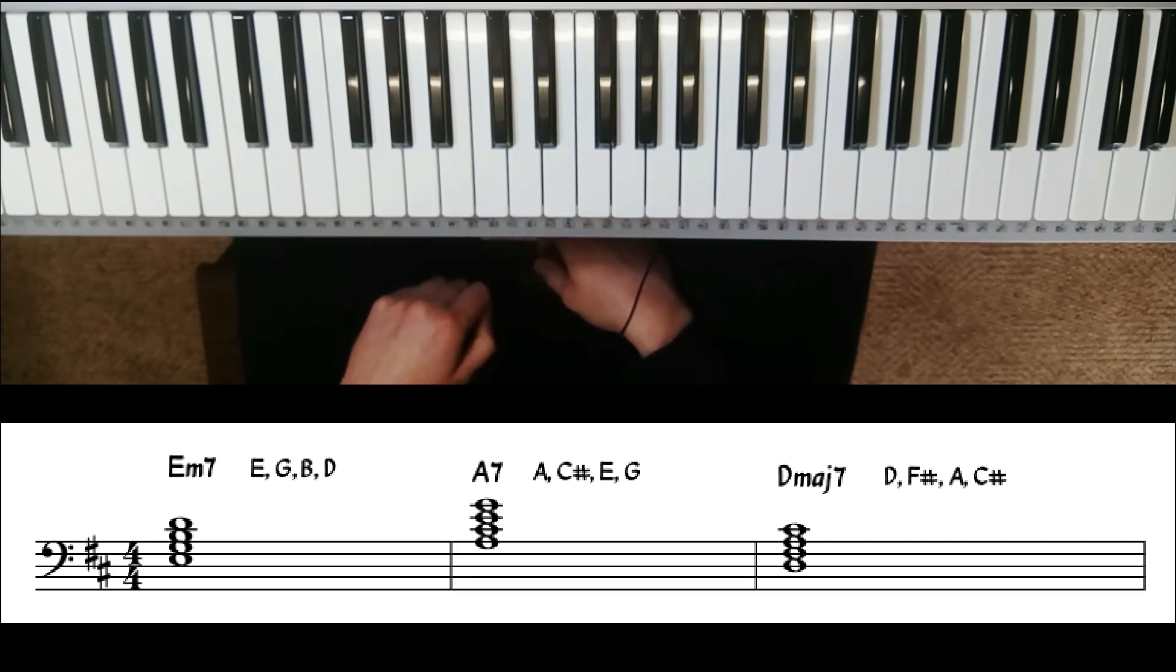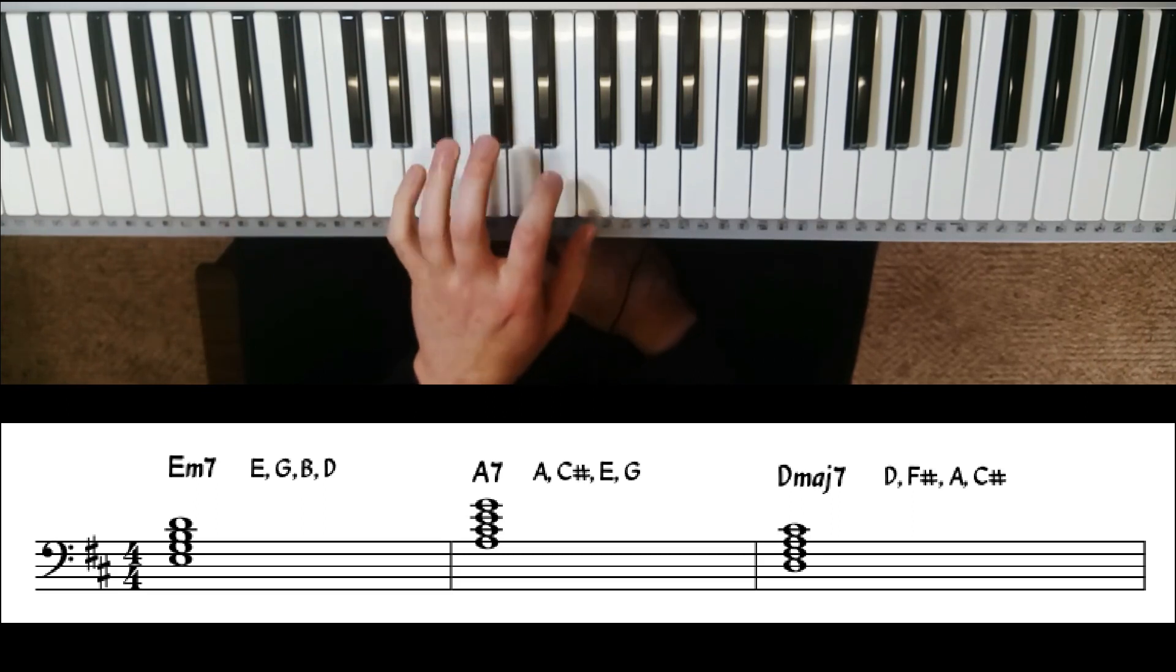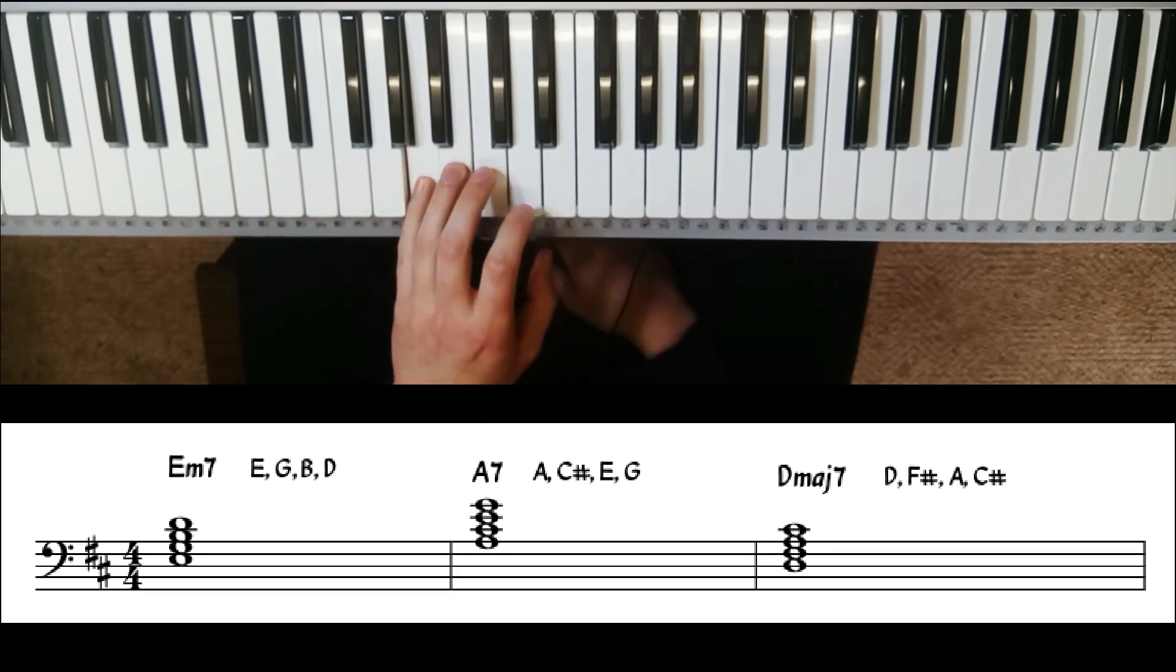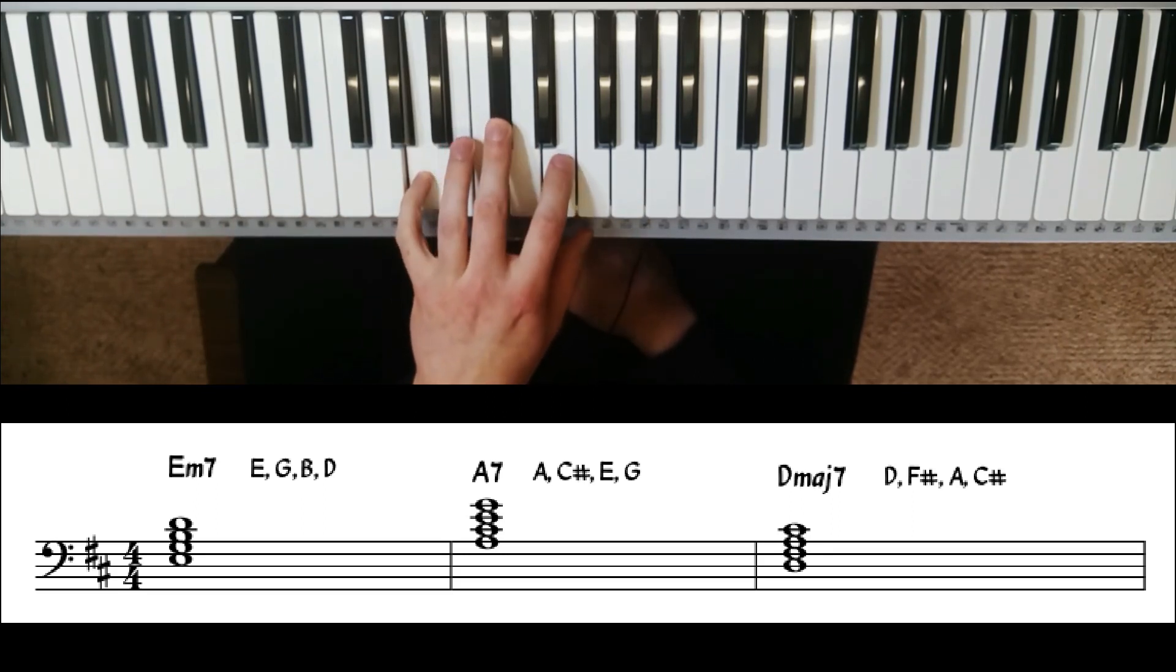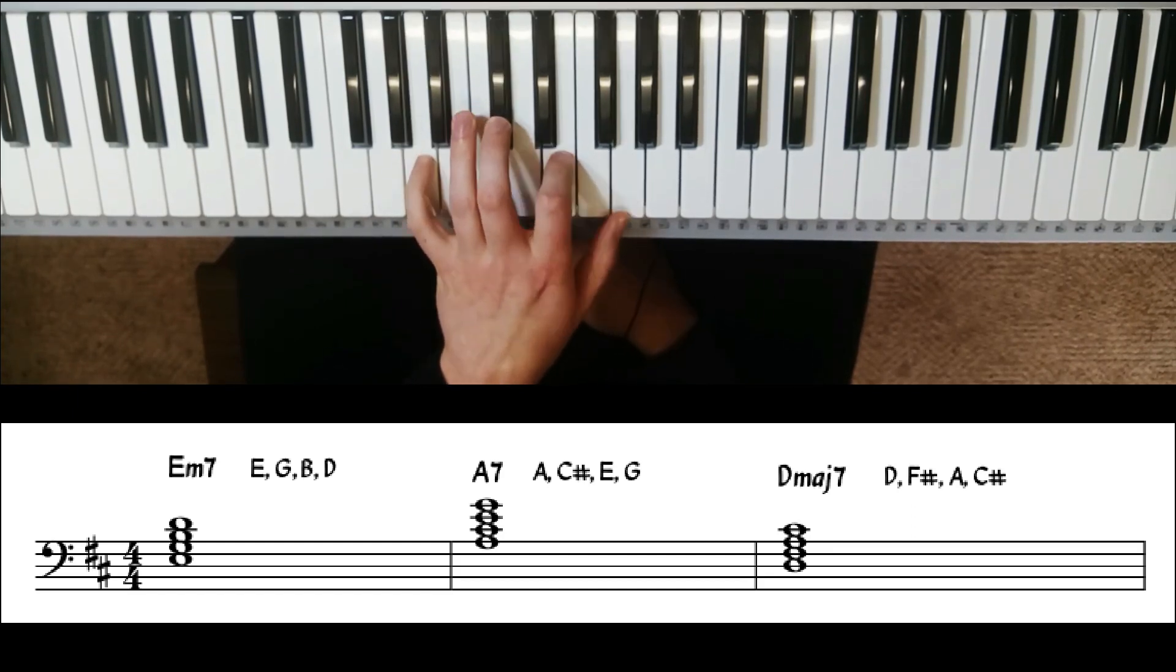So to go to our 5 chord, 1, 2, 3, 4, 5, it's going to be built on the note A. We play A, go past B, play C sharp, past D, play E and G. That's our A7 chord.